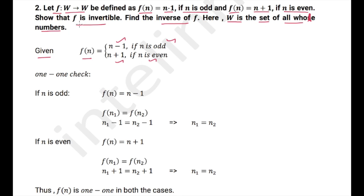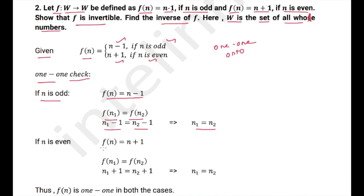To show that f is invertible, we need to do a one-to-one and onto check. For the one-to-one check: if n is odd, f(n₁) = f(n₂) implies n₁ − 1 = n₂ − 1, hence n₁ = n₂. If n is even, n₁ + 1 = n₂ + 1, which also implies n₁ = n₂. Thus f is one-to-one in both cases.